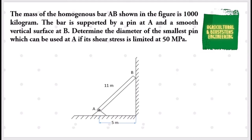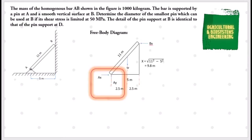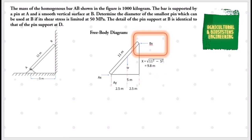The very first thing that we are going to do is to construct our free body diagram. In your screen, you will see that we have the x and y components of the pin at A. We already solved for the length x using the Pythagorean theorem. We also have a horizontal component only acting at the smooth surface at B, and lastly, the weight of bar AB.